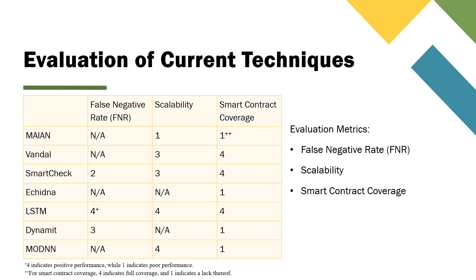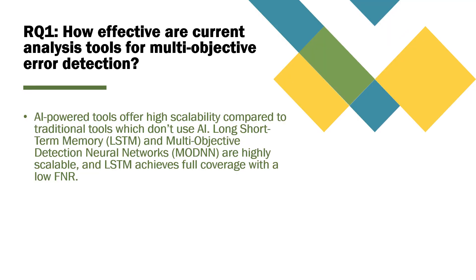Lastly, we have smart contract coverage. Smart contract coverage refers to whether or not the tool is able to cover all of the source code. This is important because when we don't achieve full coverage, it's more likely the tool will miss out on a vulnerability. A score of one indicates poor performance or a failure to achieve full coverage, while a score of four indicates good performance or successfully obtaining full coverage. This brings us to our first research question. AI-powered tools offer high scalability compared to traditional tools that don't use AI. Long short-term memory, or LSTM, and multi-objective neural networks, ModNN, are highly scalable, and LSTM can achieve full coverage with a very low false negative rate.